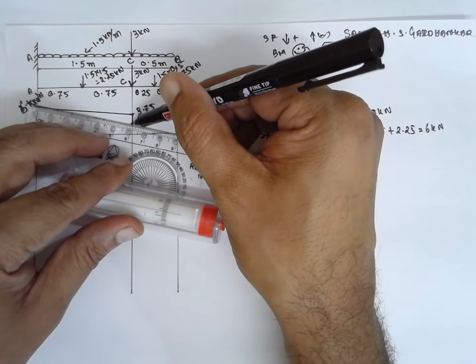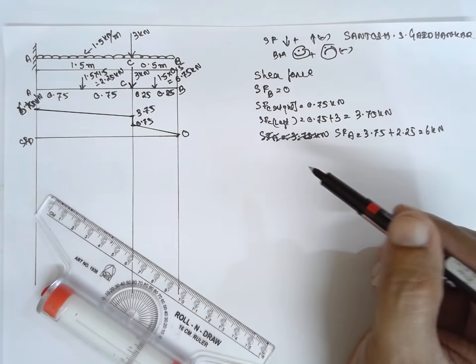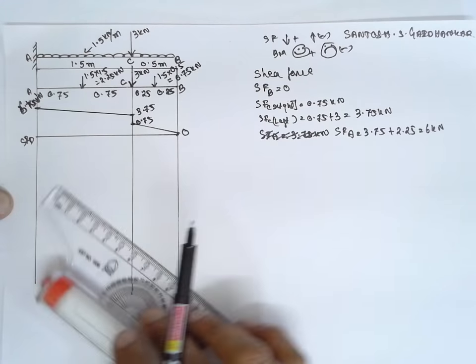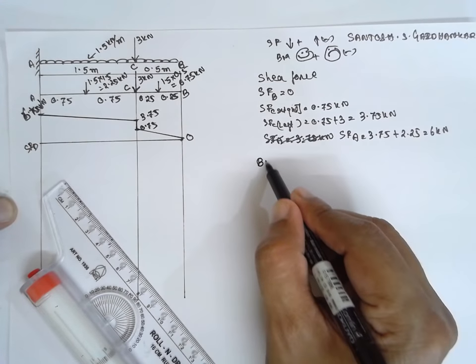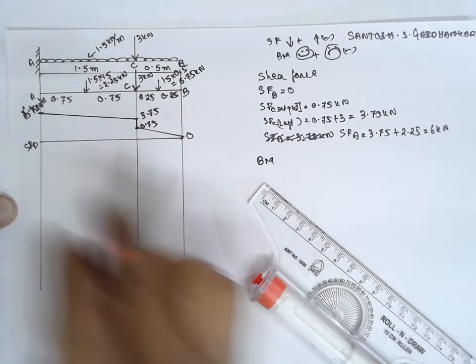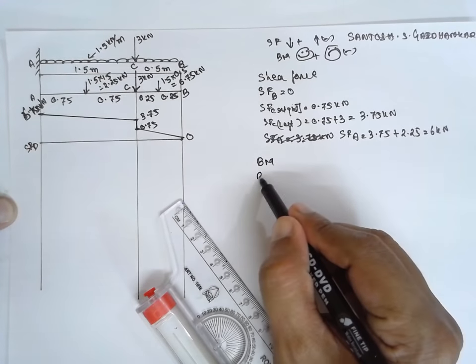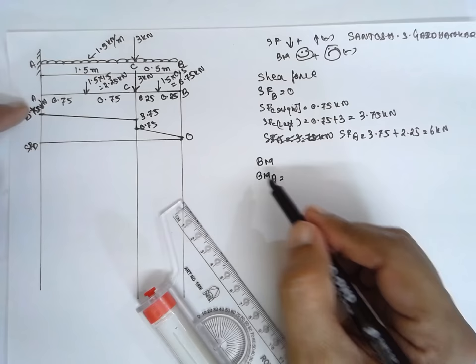Draw a line here. Again, there is an inclined line. In this way, you have to solve the problem of SFD. Now, I am going to BMD. Now, I will go from left to right. First, I will consider the BM at A.